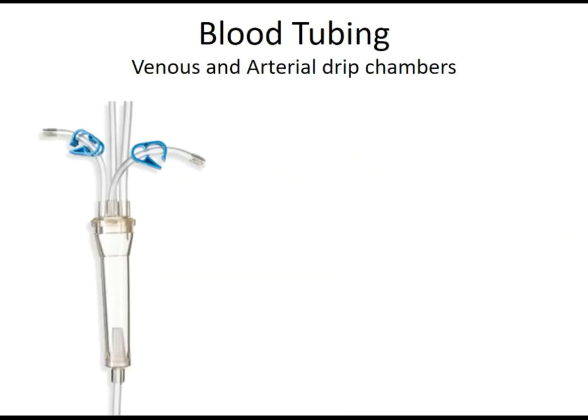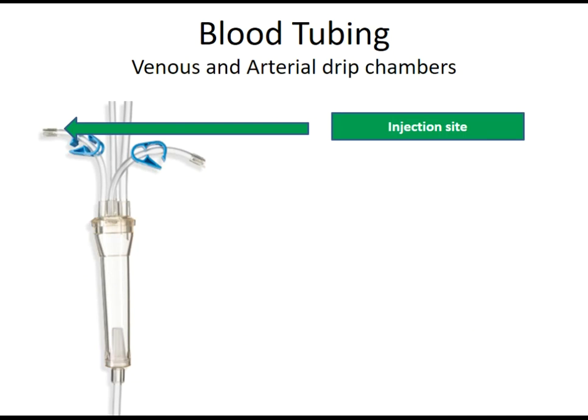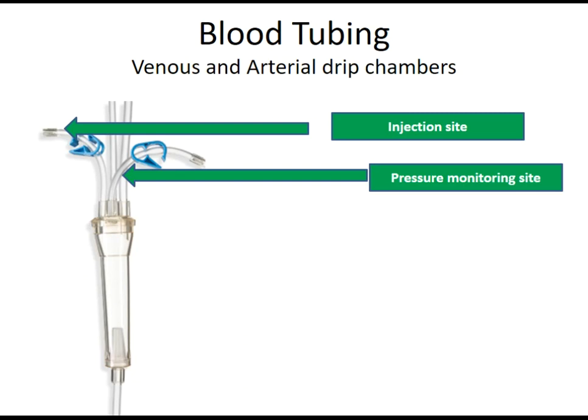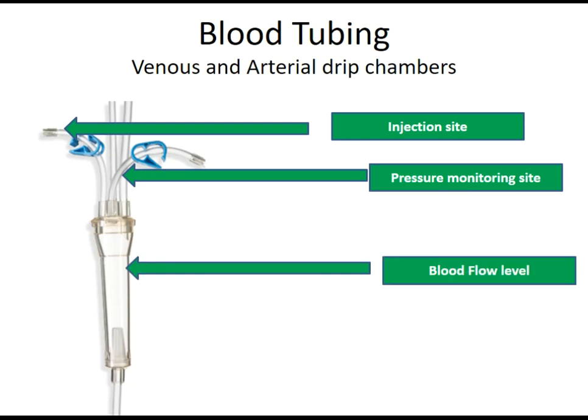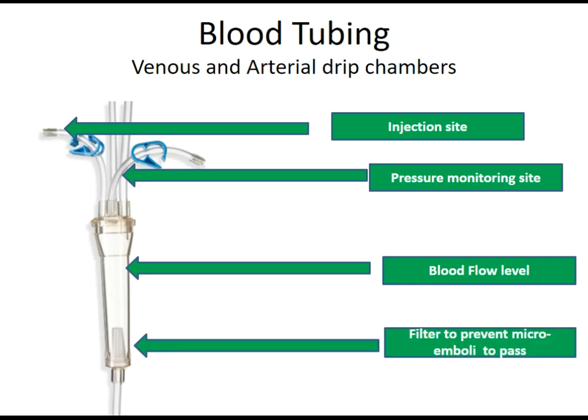The blood tubing has venous and arterial drip chambers. These include an injection site, a pressure monitor site attached to the transducer protector, a blood flow level indicator, and a filter to prevent micro-emboli from passing to the patient.